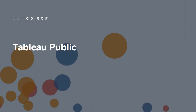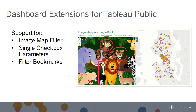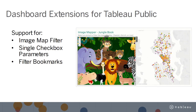The next topic we will be covering in this release is improvements to Tableau Public. If you love using Tableau Public but wish you could do more, then this feature release is for you. With extensions, you can create more customized visualizations. We are now supporting the image map filter, single checkbox parameters, and filter bookmarks extensions on Tableau Public. These extensions are available for download in our extensions gallery.